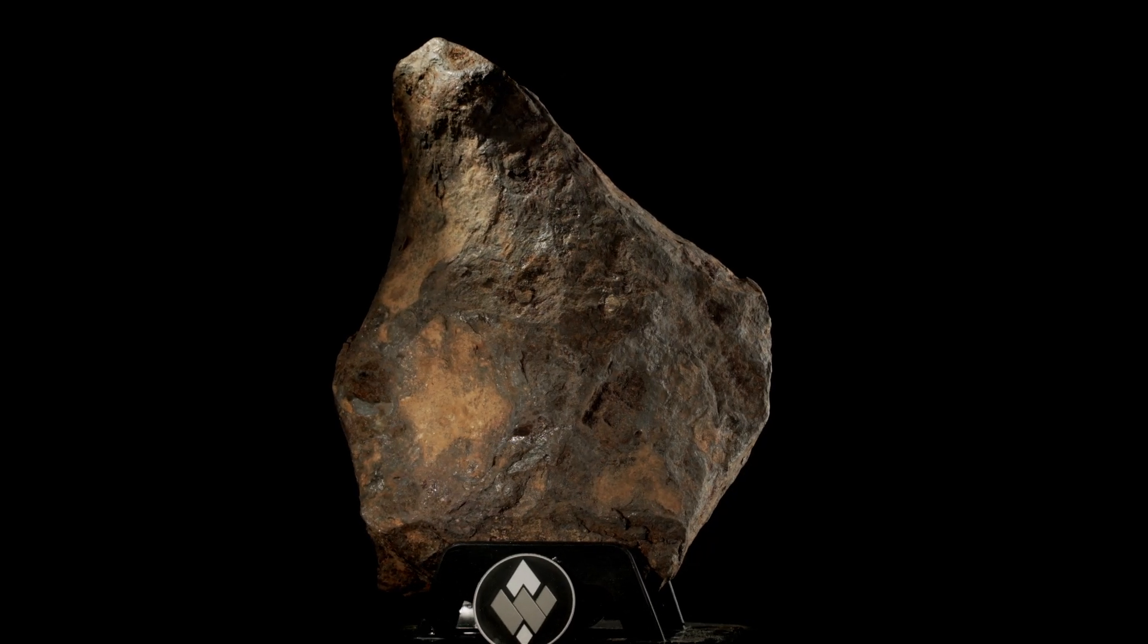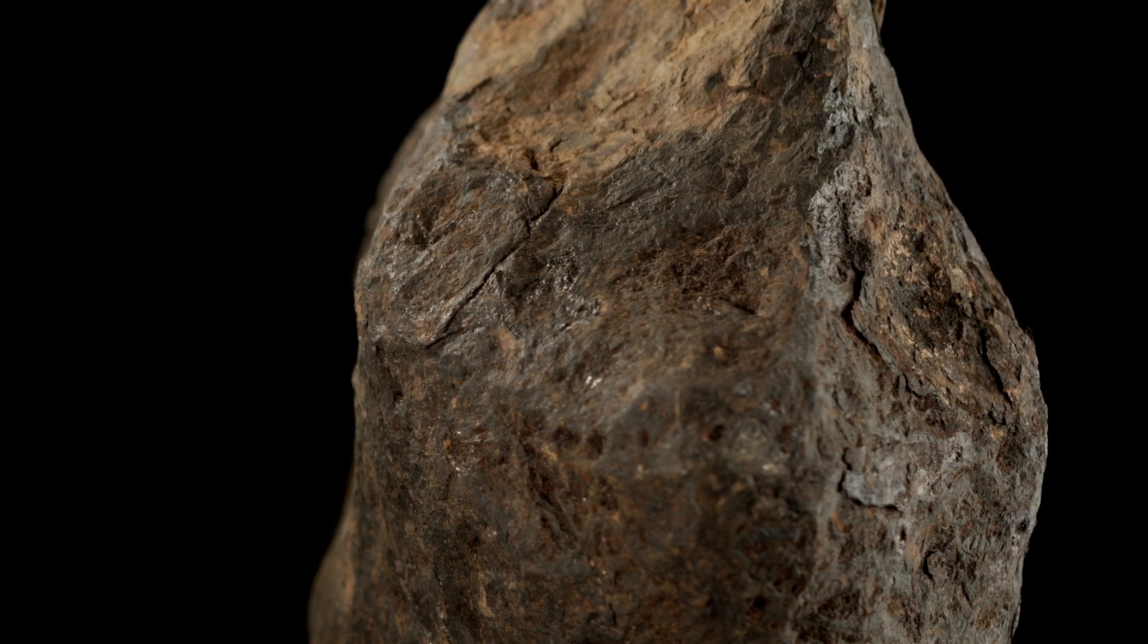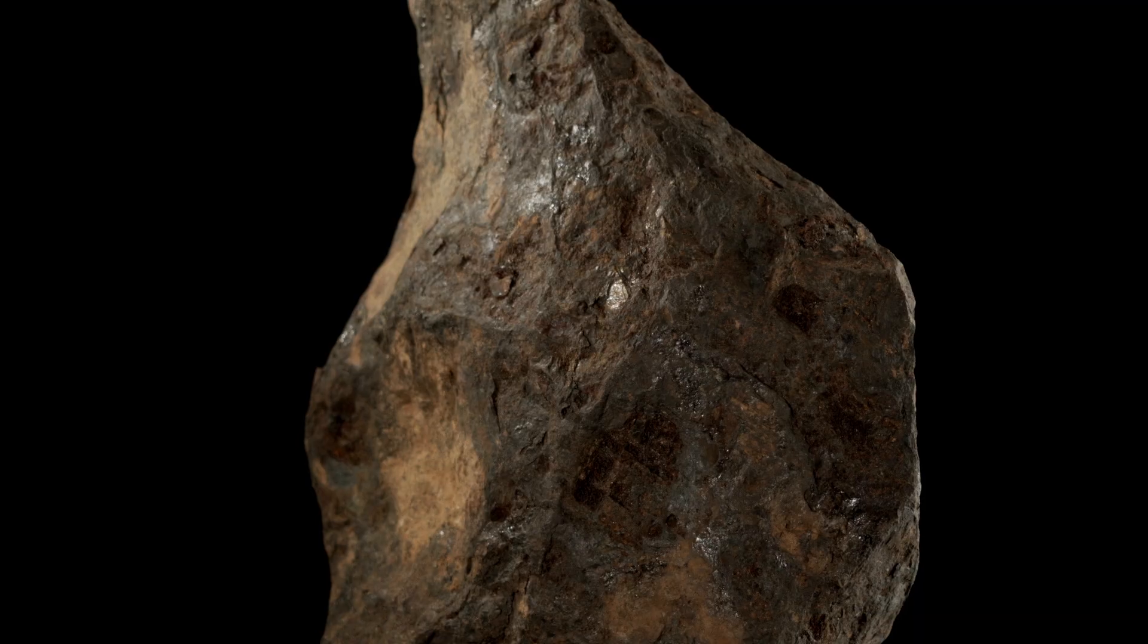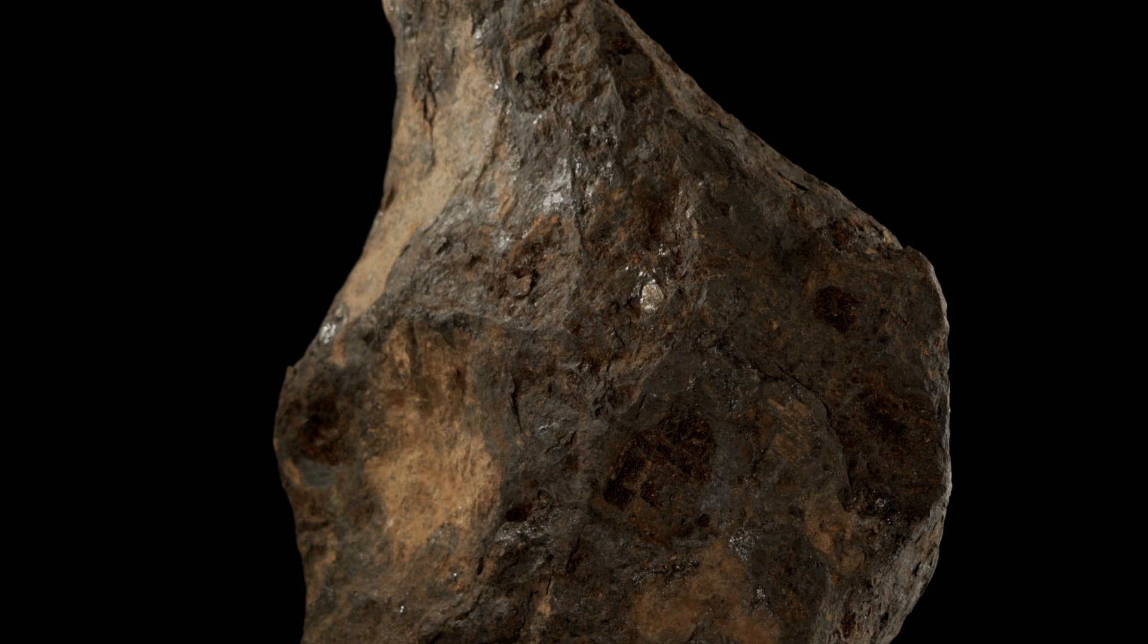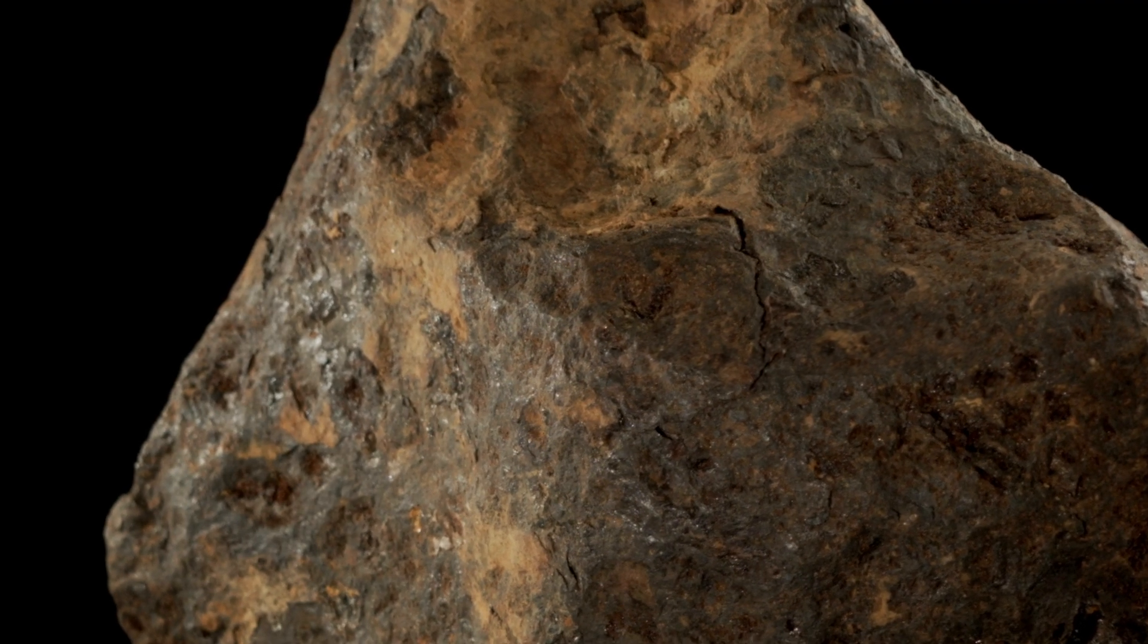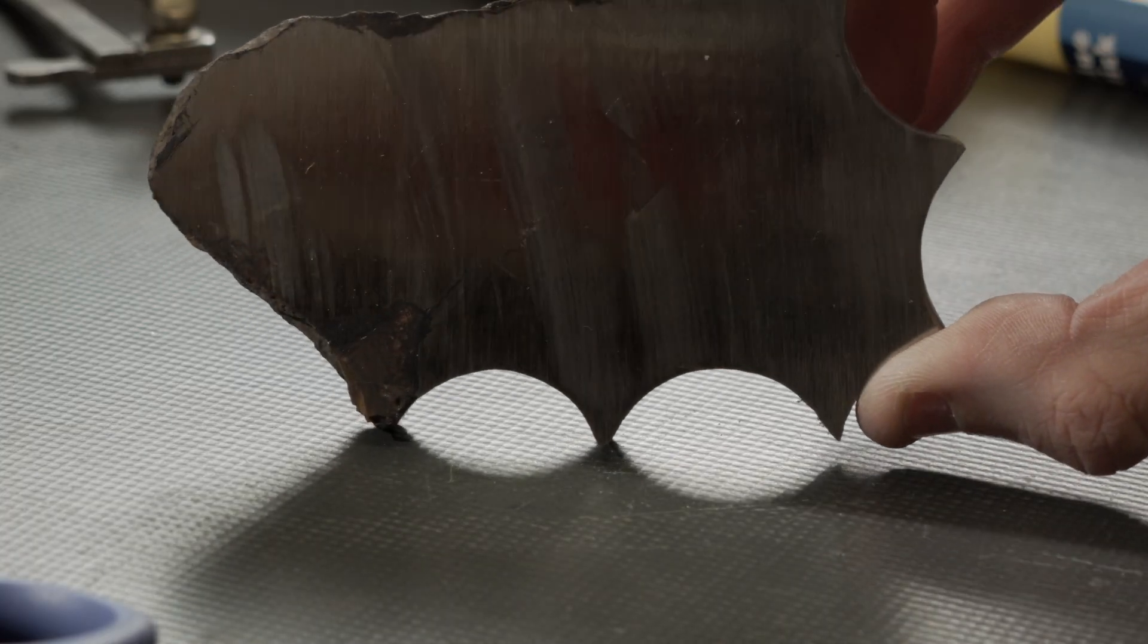This thing came from outer space. Yeah, it's a meteorite. A real meteorite. This one impacted the Earth around one million years ago as part of a huge cluster of fireballs. Now let's make it rain.